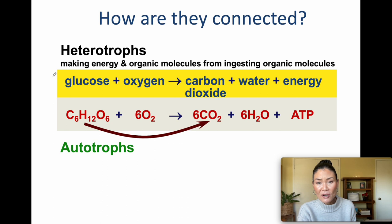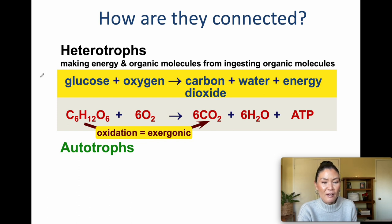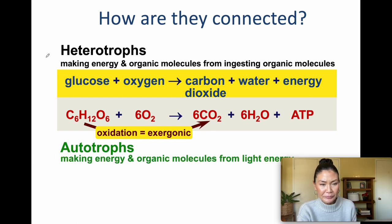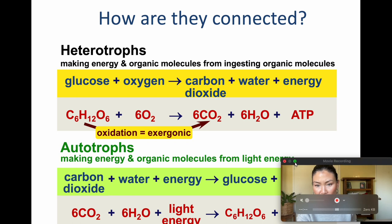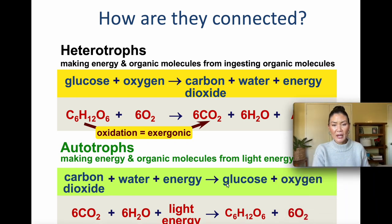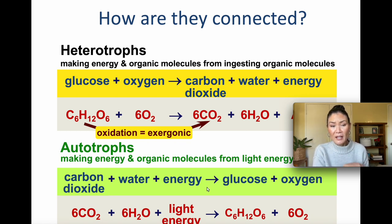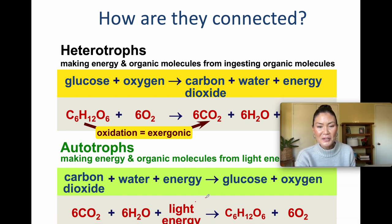This is what we call an exergonic reaction because energy is being released and sugars are being broken down. Autotrophs are organisms that make organic compounds and make their own food from light energy in the case of photosynthesis — they take carbon dioxide, water, and solar energy to make organic compounds such as glucose, releasing oxygen as a byproduct. This is an endergonic reaction.